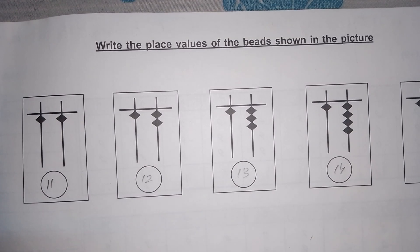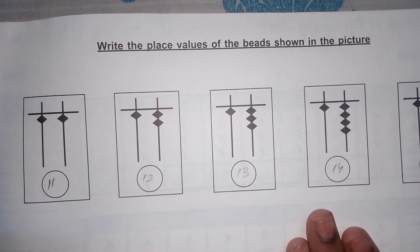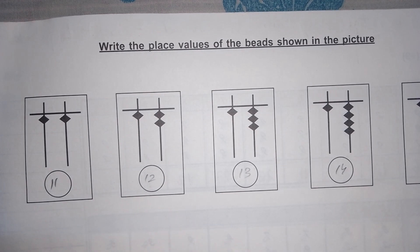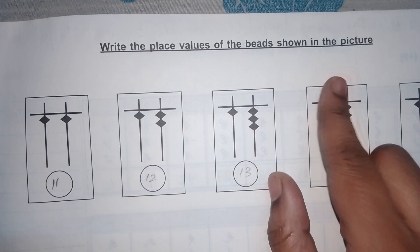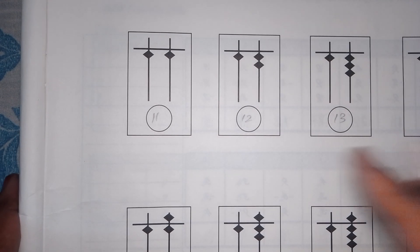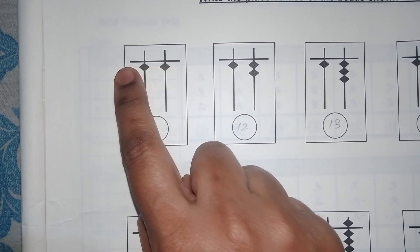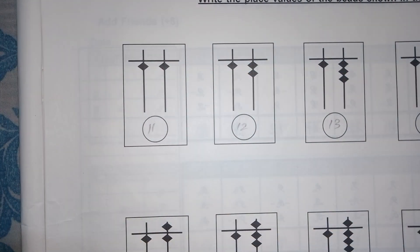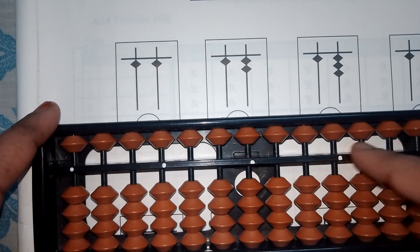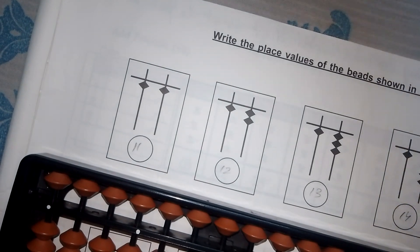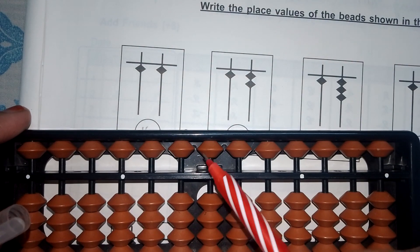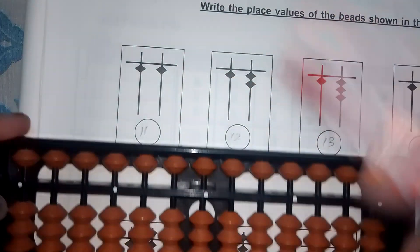Hello everyone, namaste. Today we are going to learn about double digits on abacus. Here we have to solve abacus images — double digits with pictures. We need to write the place values of the bits shown in the picture. This slipping line is the middle bar. This one is the units rod, and the left side of the units rod is the tens rod.